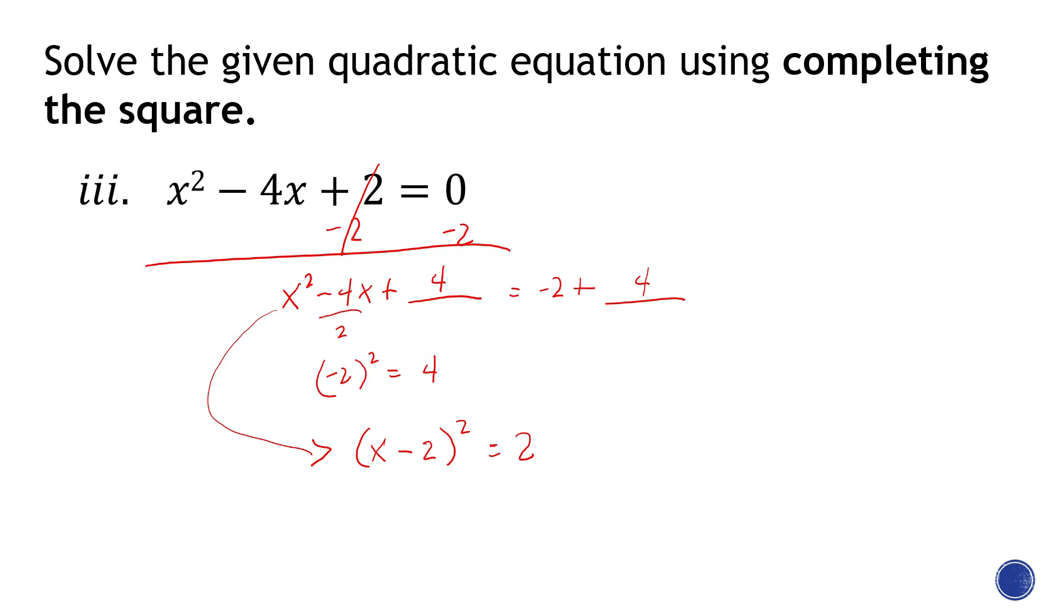Now, once you reach this point, everything is going to be easy. The next step is to find the square root of both sides. Now, since the square root of 2 is a decimal, you have options here. So you need to communicate with your teacher.